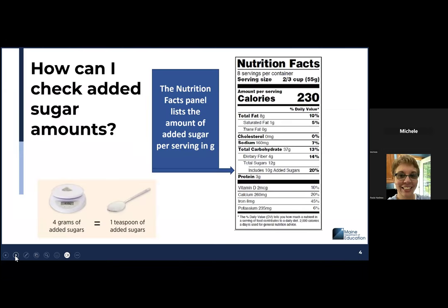So how can I check added sugar amounts? Looking at your nutrition facts panel will tell you exactly how much added sugar there is in your food. As you can see looking here, this nutrition facts label says that there is a total of 12 grams of sugar and this includes 10 grams of added sugars. That is how you can differentiate between the two. And just for a little visual reference, four grams of added sugars equals one teaspoon of sugar. So in this particular nutrition facts, we have about two and a half teaspoons of added sugar in one serving.